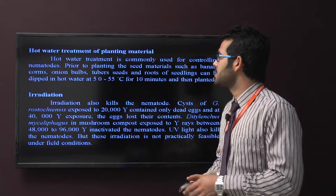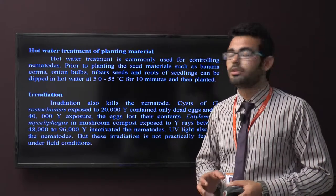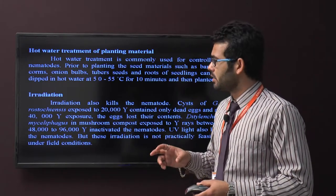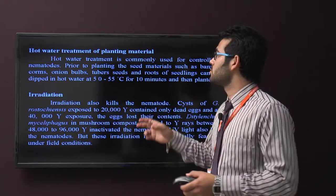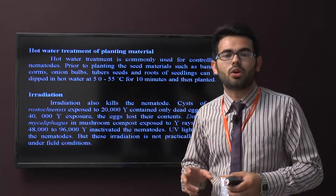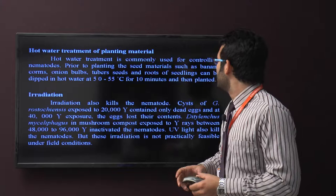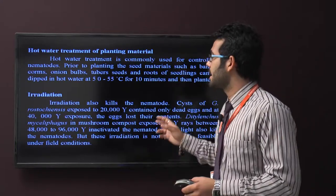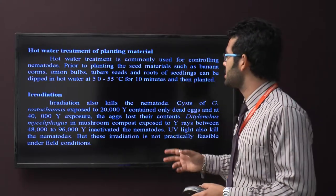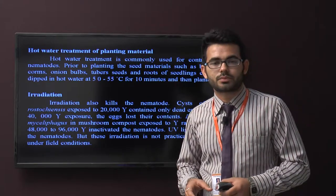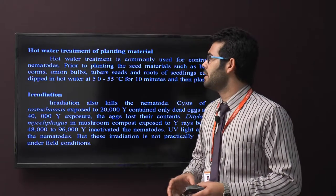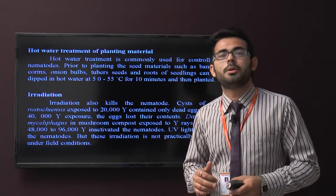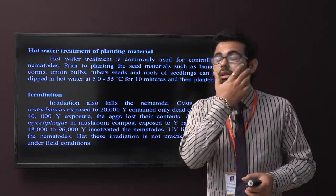Now hot water treatment. In hot water treatment, also same as steam treatment. When used instead of steam, we can also use hot water. Hot water treatment is commonly used for controlling nematodes prior to planting seed material such as banana, corm, onion bulbs, and tuber seeds. Roots of seedlings can be dipped in hot water at 50 to 55 degrees centigrade for 10 minutes and then planted.